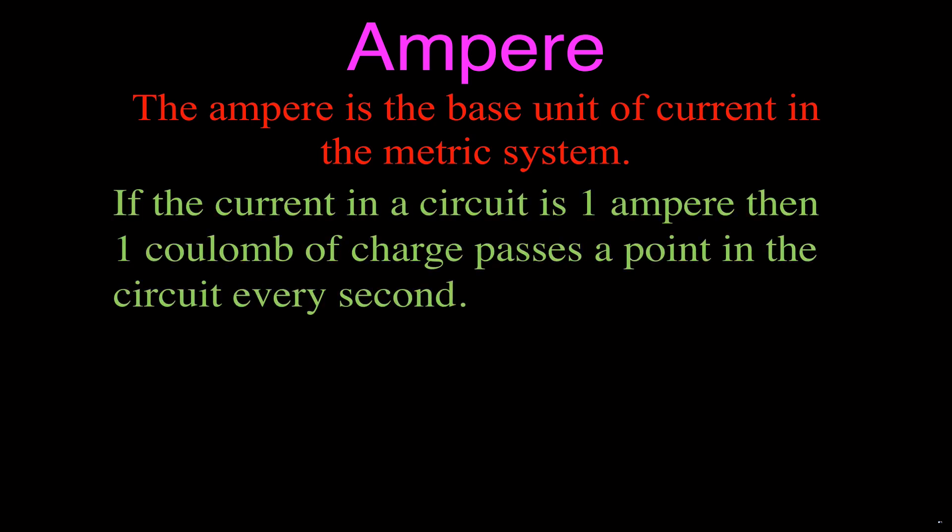Now the definition of what is an ampere is like this: if the current in a circuit is one ampere, then one coulomb of charge passes a point in that circuit every second. If we draw it out in symbols we would say that one ampere, the current is one ampere, is equal to one coulomb per second.